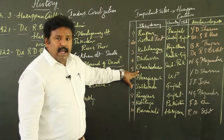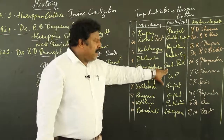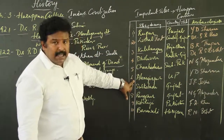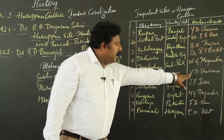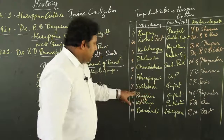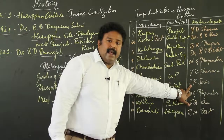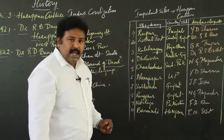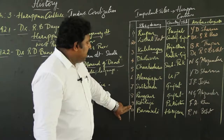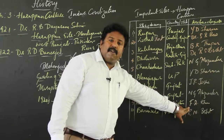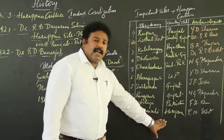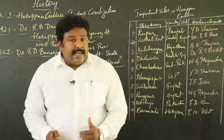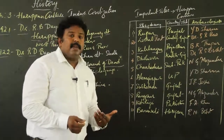Then we have Chanudaro, found at Sindh, Pakistan, excavated by N. G. Mazumdar. Likewise, Alamgirpur in Uttar Pradesh, India — Y. D. Sharma was the archaeologist who excavated it. Surkotada in Gujarat, excavated by J. P. Joshi. Likewise, Rangpur in Gujarat — N. G. Mazumdar was the archaeologist. Kota Diji in Pakistan, excavated by F. A. Khan. Banawali at Haryana, excavated by R. N. Bisht. These are the important sites and cities excavated by different archaeologists in different timelines.